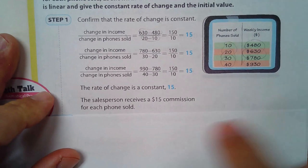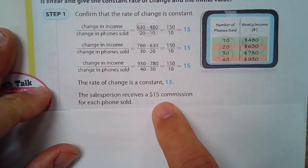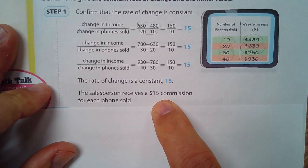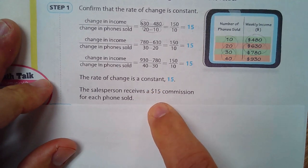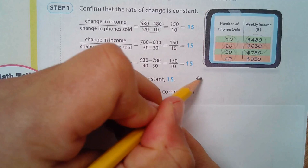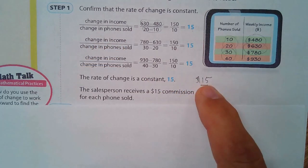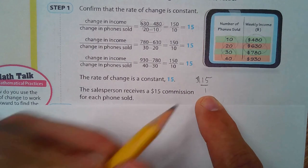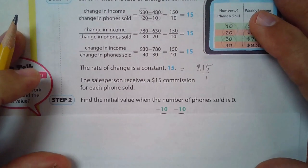The salesperson receives $15 commission on each phone sold. So it would be 15 over 1, so $15 per phone sold.